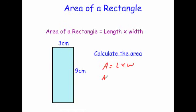So the area would be equal to the length, 9, times the width, 3. And 9 times 3 is equal to 27. And let's just make sure we've got the right units. Because it's an area, the units would be centimeters squared. So the area of this rectangle would be 27 centimeters squared.